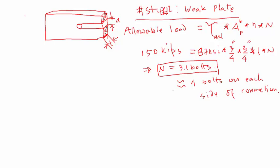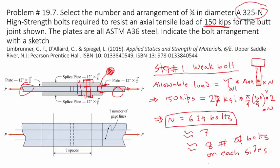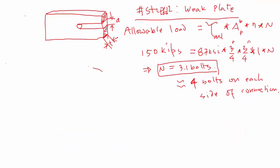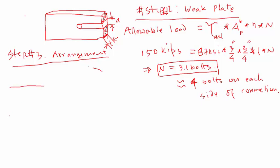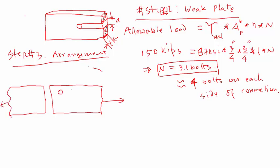Remember, for the weak plate, 4 bolts is enough. However, for the bolt to be okay for this connection, we need 8 of them. So we actually need 8 bolts on each side. Step number 3 is to sketch the bolt arrangement — that's the difference from a simple load calculation. Step number 3 in connection design is the arrangement. I'll draw the top view of one side: with 8 bolts, I can arrange 4 like this and 4 like this — and also 8 bolts on the other side as well.